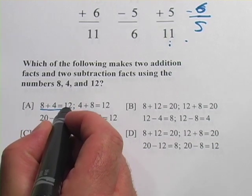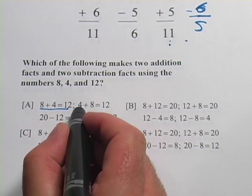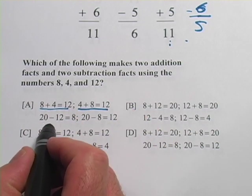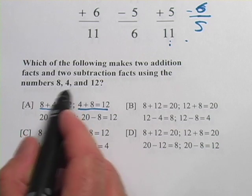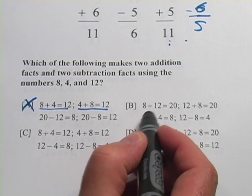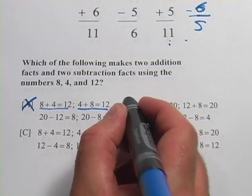Let's look at A here. We've got 8 plus 4 equals 12. That seems right. 4 plus 8 equals 12. Good. Those are the two addition facts. And then 20 minus 12, well, 20 is not part of this original number sentence, so no. Let's look at B. 8 plus 12 equals 20. 20 again. We don't want 20.